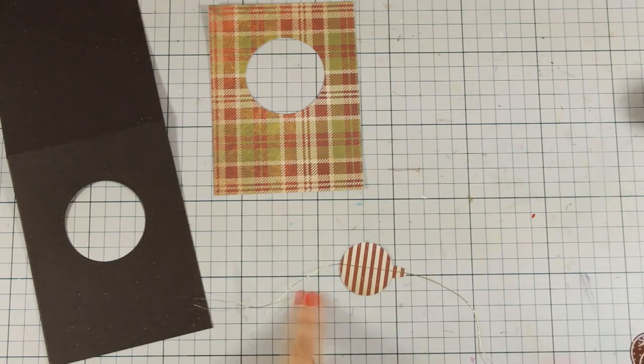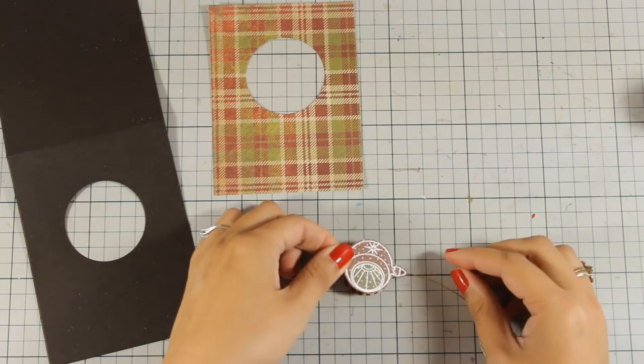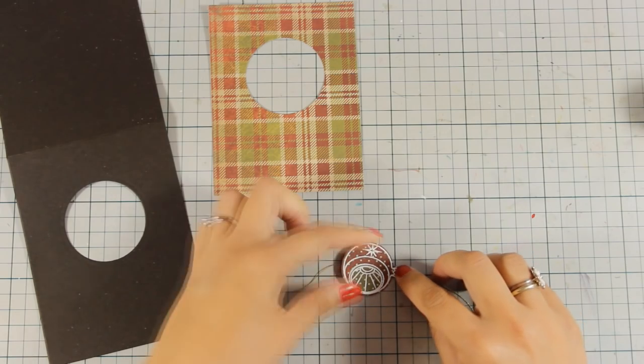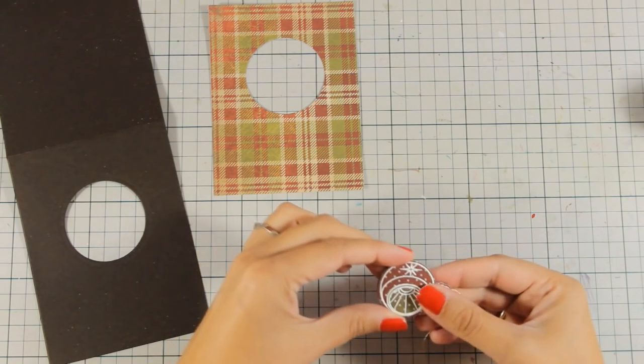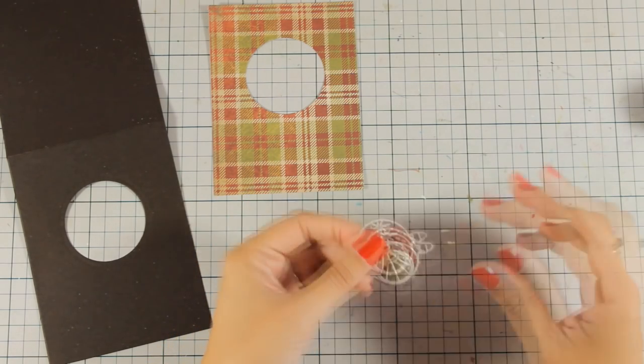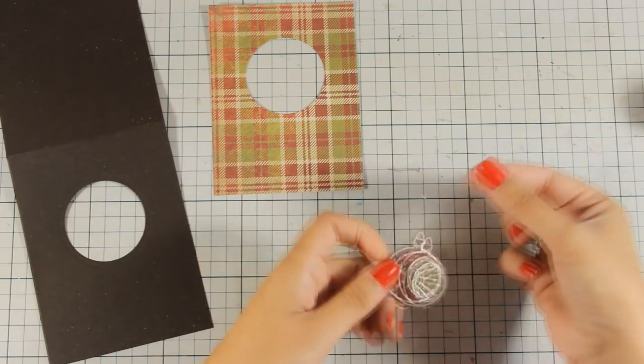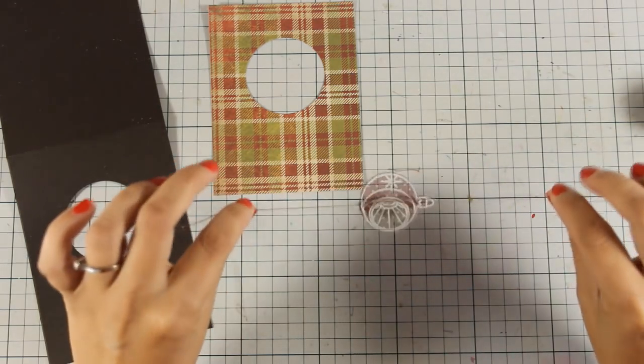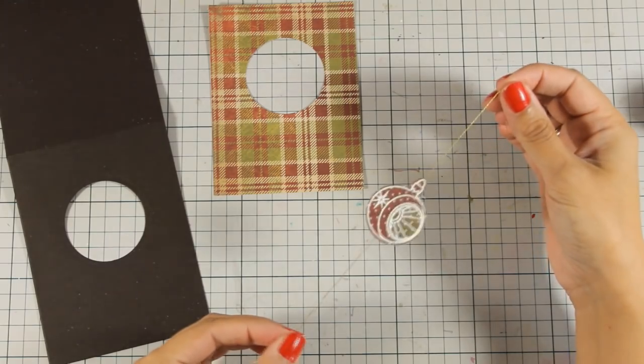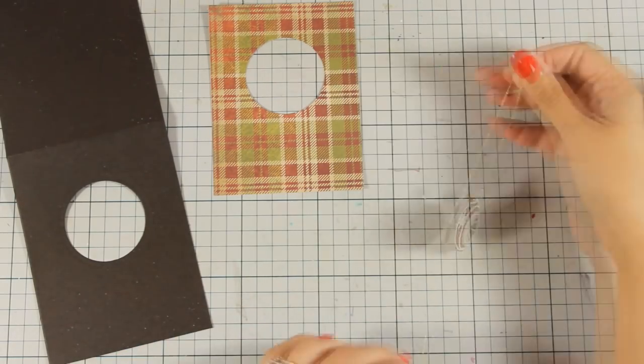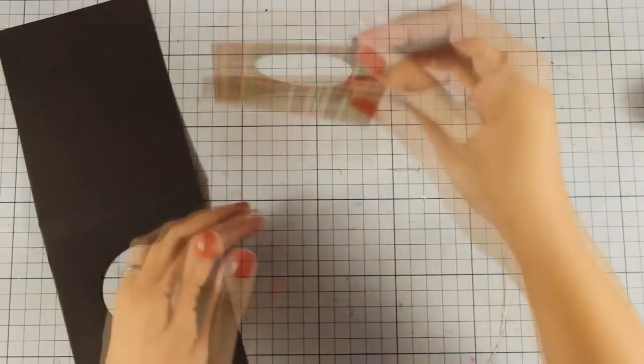So I am sticking it at the back and I am going to cover it up with the other ornament. So I have sandwiched the thread inside from top to bottom and this is going to spin all around in my card.